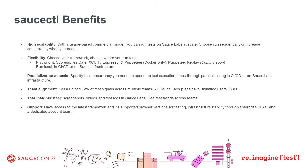Before jumping into a demo of how SauceControl looks and functions within the UI, I want to go over the high-level benefits of SauceControl. First, high scalability — with a usage-based commercial model, you can run tests on SauceLabs at scale, and choose to run sequentially or increase concurrency when you need it. SauceControl provides flexibility: choose your framework, choose where you run tests — Playwright, Cypress, TestCafe, XCUITest, Espresso, Puppeteer (Docker-only), and Puppeteer Replay (coming soon) — run locally, in CI, or on SauceLabs infrastructure.